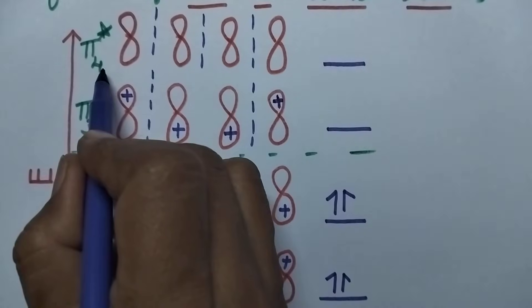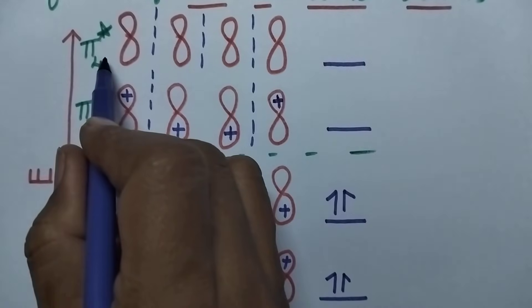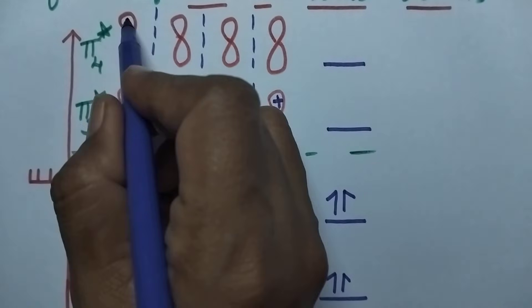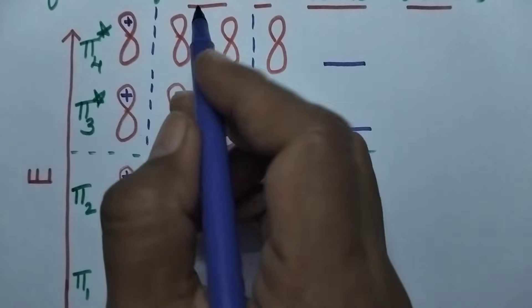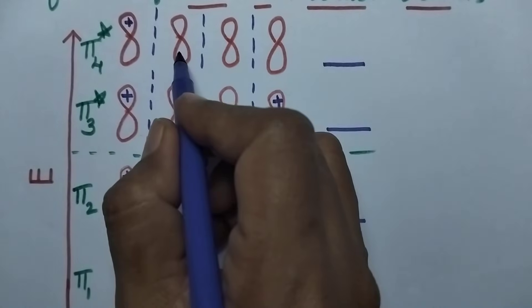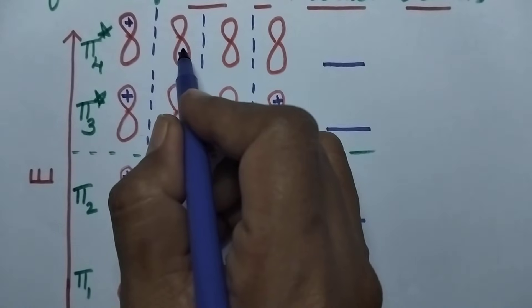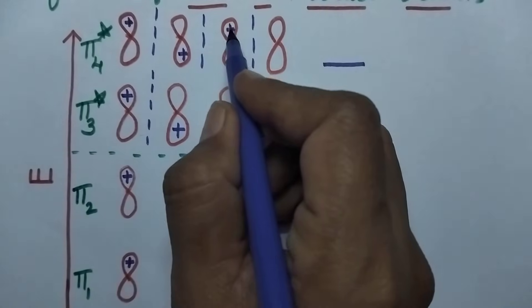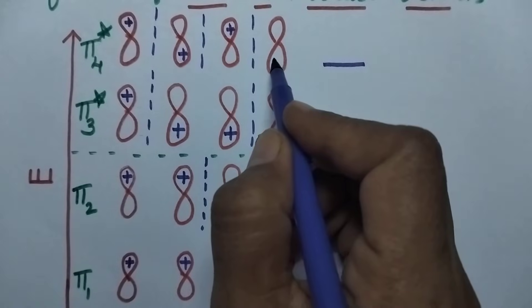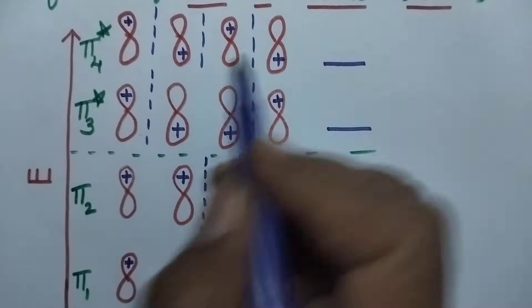Coming to the π4* molecular orbital, each p orbital is unsymmetrical to each other, so we have to represent them in opposite directions.